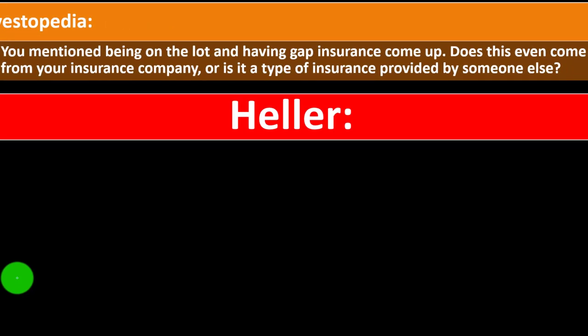Investopedia asking: you mentioned being on the lot and having gap insurance come up. Does this even come from your insurance company or is it a type of insurance provided by someone else? Gap insurance is kind of a part of car insurance, but not one of the main things we'd first think of. Our expert indicates gap insurance might be useful to a particular purchaser in specific situations, but oftentimes it might not be the most useful thing in general for most people, and it could be a scammy area where people aren't getting a lot of benefit.